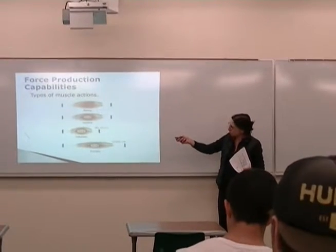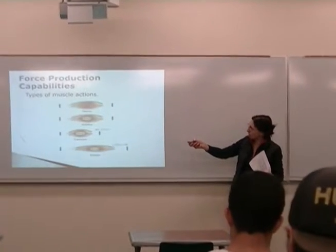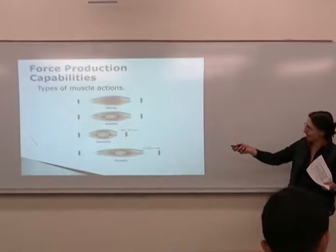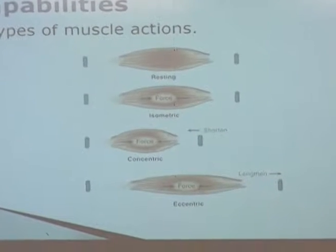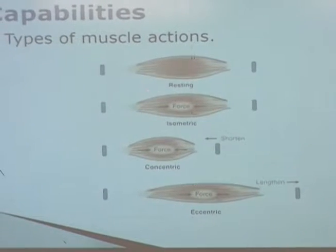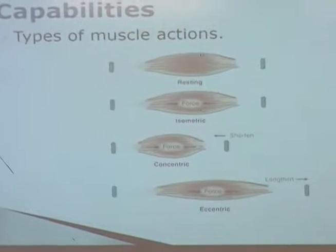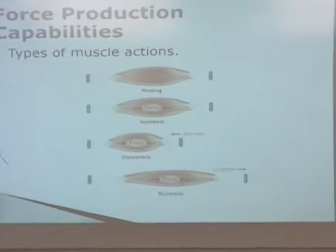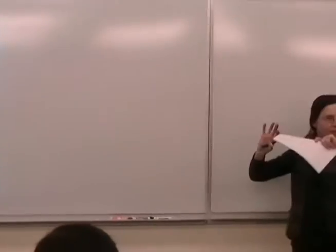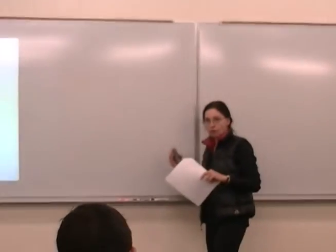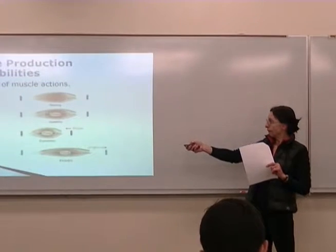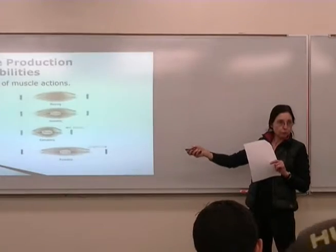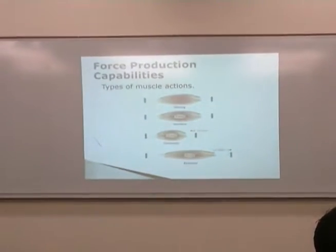For an isometric contraction — isometric force production — we don't see any change in the length, even though we see high forces within the muscle itself. Why? Because the force production is equal to the load that's being put on the muscle. It's enough to keep the load at bay, but it's not enough to do anything. You can't overcome the load.